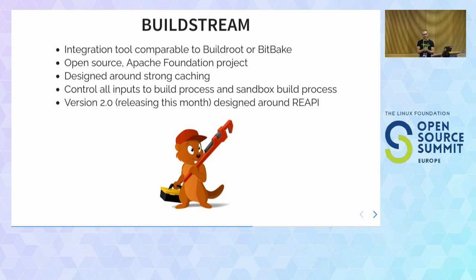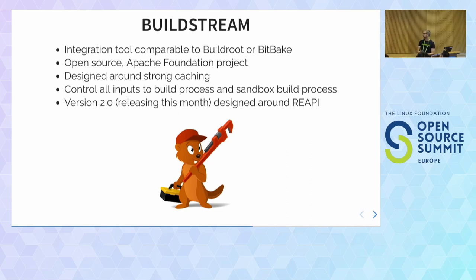BuildStream itself dates from around 2016, so its design predates the RE API being public. But it already had a similar design of strong caching — hashing inputs to avoid rebuilding if they haven't changed. The motivation for 2.0 is redesigning it around the existing RE API standards, re-implementing the core to support the standard rather than a custom protocol. The 1.0 series had its own custom cache server. The mascot is the BuildStream beaver, because beavers build things in streams — and the original developer is Canadian, so it fits perfectly.